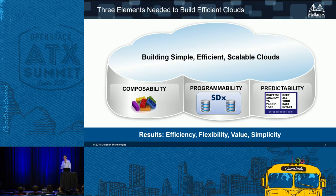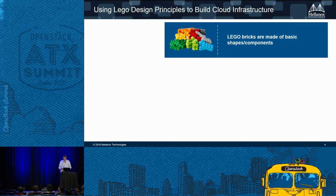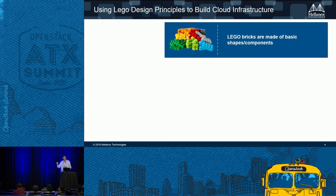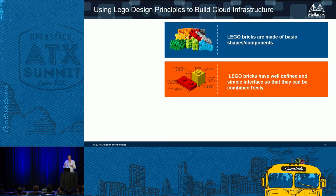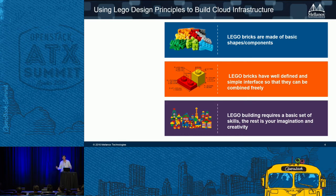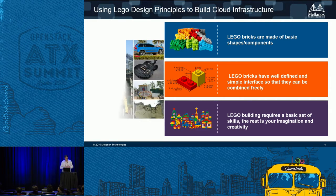I'm going to talk first about the composability piece and the Lego. One of my colleagues here, Chloe, has a young son. She was talking about the fact that with Lego, he's able to build many, many different things. One of the first key things is that all of the pieces are fairly basic, and all those components can come together using standard interfaces. All the Lego pieces are well-defined and connect well together so that they can be combined very freely — and then it's up to your imagination how you build these things. When you have those first two principles, you can do automation and really use your imagination to build whatever you want and scale it very nicely.